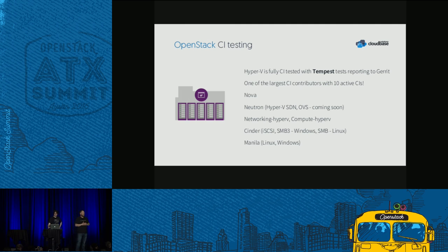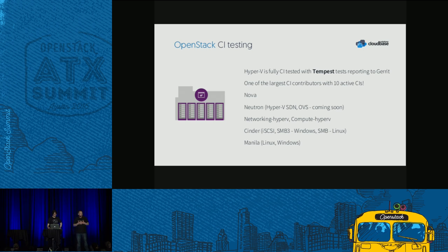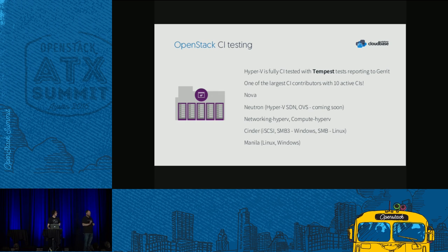One of the things we pride ourselves on at Microsoft is our continuous integration effort for OpenStack. Many of you might not know, but we actually operate one of the largest continuous integration infrastructures in all of OpenStack — we're consistently either in the top two or top three in terms of the amount of upstream votes we commit to the core project.